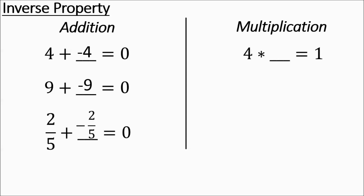Over here for multiplying, you're ending up with 1. This one can be a little confusing because finding the reciprocal of 4 can be a little bit weird. You want to think of 4 as 4 over 1, and then the reciprocal is when you take a fraction and flip it upside down. So 4 times 1 fourth is equal to 1. Then 9 times something equals 1 — think of it as 9 over 1, flip it, take its reciprocal — it's 1 ninth.